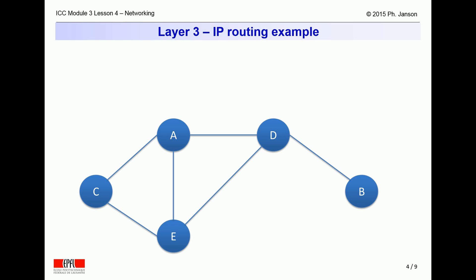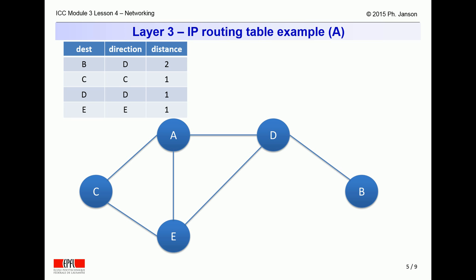To understand how this works in practice, consider this example of a small network involving five nodes A, B, C, D, and E. The routing table at router A would be as illustrated on this slide, showing that node B is two hops away through node D, that node C is directly reachable one hop away, that node D is also directly reachable one hop away, and that so is node E.